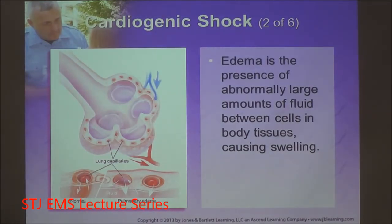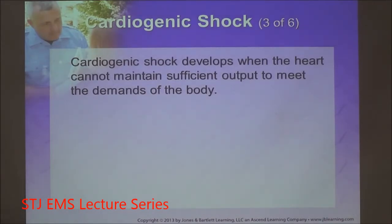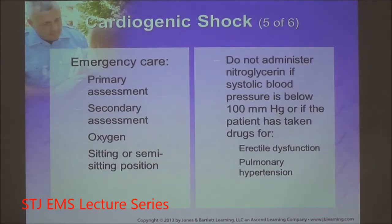Even if some oxygen makes it across, the failing pump can't get it down to the tissue. Cardiogenic shock is a rapid type where body systems can shut down quickly. The only cure is a new heart, a balloon pump, or a left ventricular assist device. Signs and symptoms include cyanosis, cool extremities, change in mental status, and all that compensatory function — though, unlike other shock types, the beta receptors on a diseased heart won't be as effective, so tachycardia may not be present.